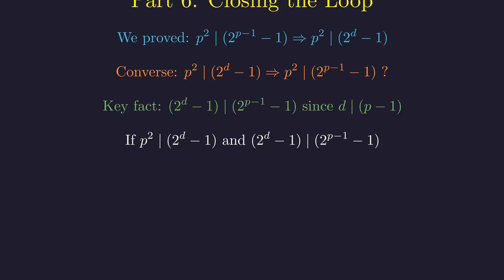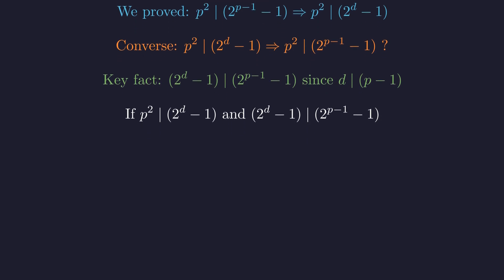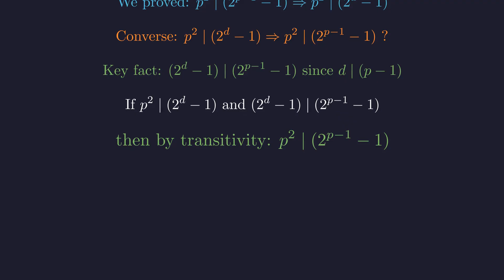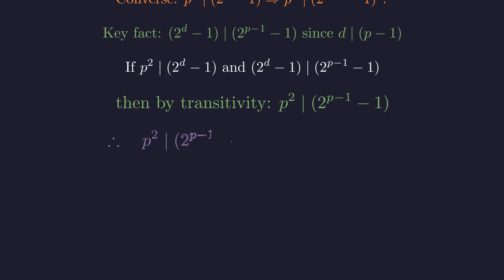Therefore, if p squared divides 2 to the d minus 1 and 2 to the d minus 1 divides 2 to the power of p minus 1, minus 1, then by transitivity of divisibility, p squared divides 2 to the power of p minus 1, minus 1. The converse is proven. We have established complete equivalence. Our original condition is satisfied if and only if p squared divides 2 to the order d minus 1.